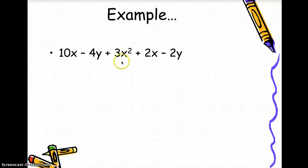So in this one, let's look at 3x squared. Is there any other term which is similar to 3x squared? No other term has x squared as its variable, so this is by itself. Then we have 10x and 2x. Both constants have the same variable which is x, so they are like terms.